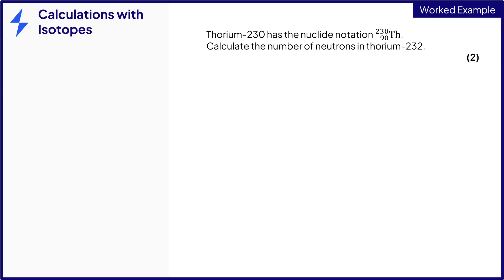Exam questions on isotopes come in a wide variety. Here's one example. Thorium-230 has the nuclide notation 230/90 Th. Calculate the number of neutrons in thorium-232 for two marks.